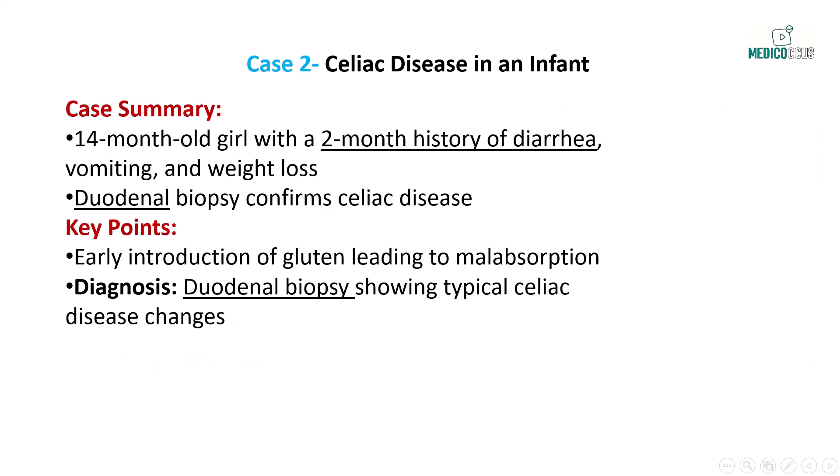Next, consider a 14-month-old girl who has experienced diarrhea for two months. Her parents report three to five loose, non-bloody bowel movements daily, with occasional vomiting. The child has lost weight over this period, despite a previously well-balanced diet. Physical examination reveals no significant findings, but laboratory evaluation and duodenal biopsy confirm the diagnosis of celiac disease. In this case, the early introduction of gluten into the diet has triggered an immune response, leading to symptoms of malabsorption.